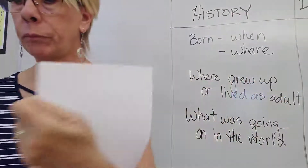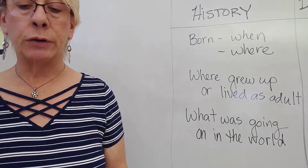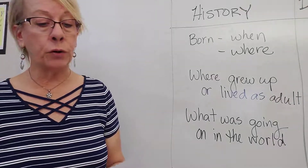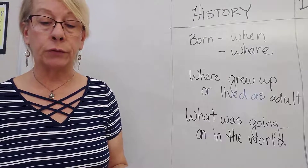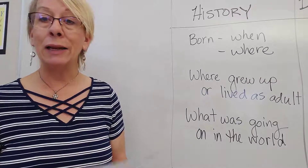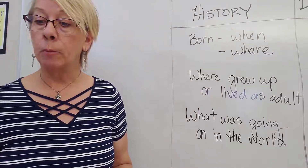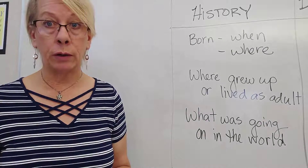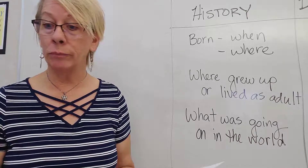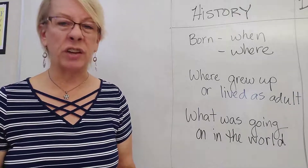So in the history column, we put when and where the person was born, where they grew up or lived as an adult, and what was going on in the world when they were alive — because that will influence what they've written. Doris Gates was born on November 26th, 1901, more than a hundred years ago, in Mountain View, California, the oldest daughter of Charles Obed and Jesse Louise Gates. Let's highlight born November 26th, 1901, and Mountain View, California. We don't need to write down her parents' names — just fun to know that.